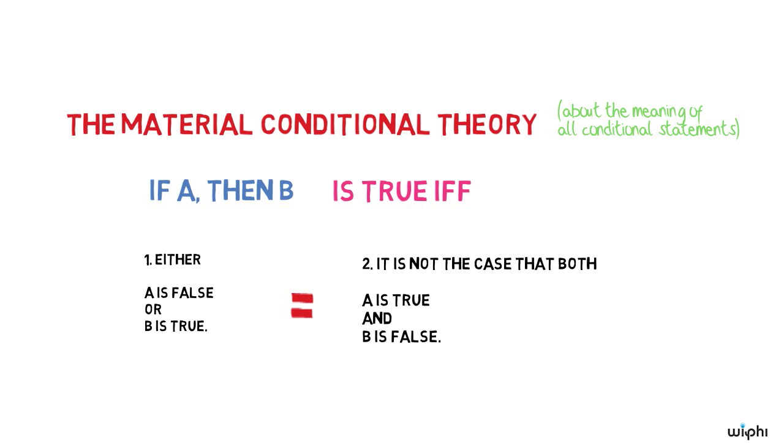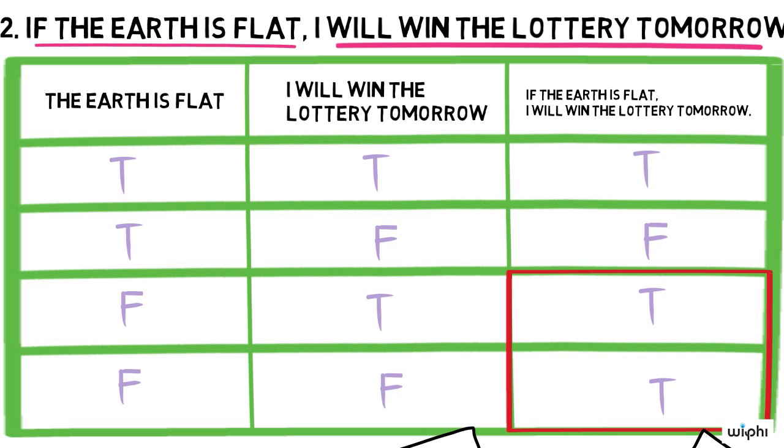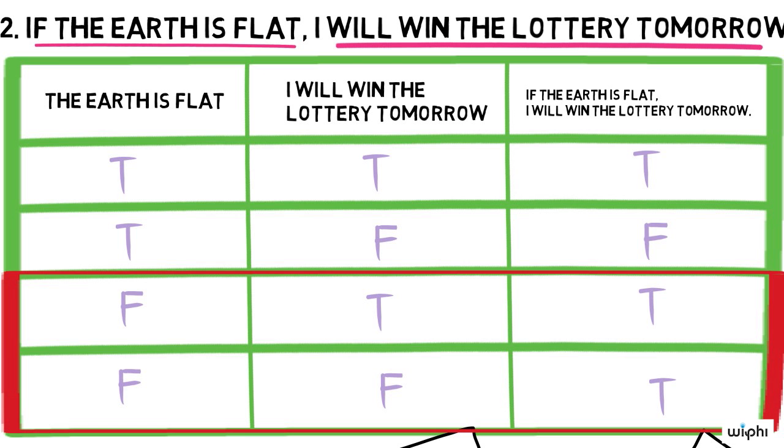But notice that the material conditional theory just doesn't care at all about this missing connection. Rather, it only cares about the truth values of the conditional's antecedent and consequent. According to the material conditional theory, if the antecedent's false, the conditional's true.